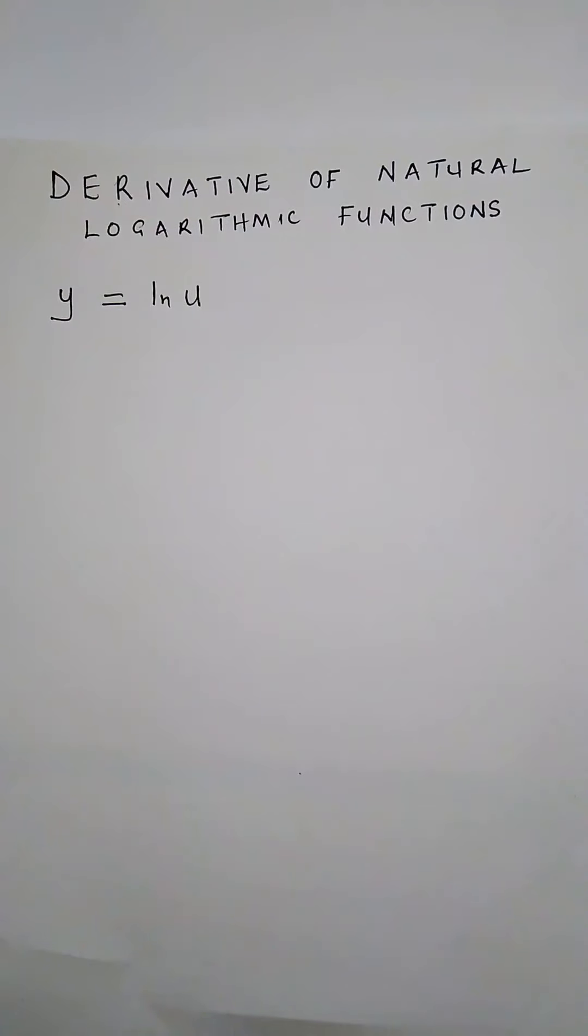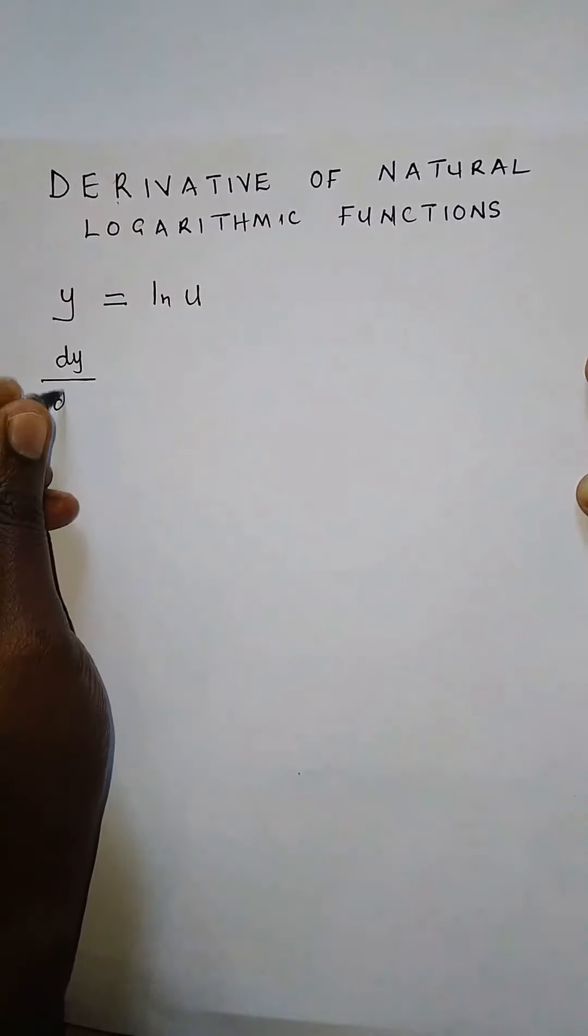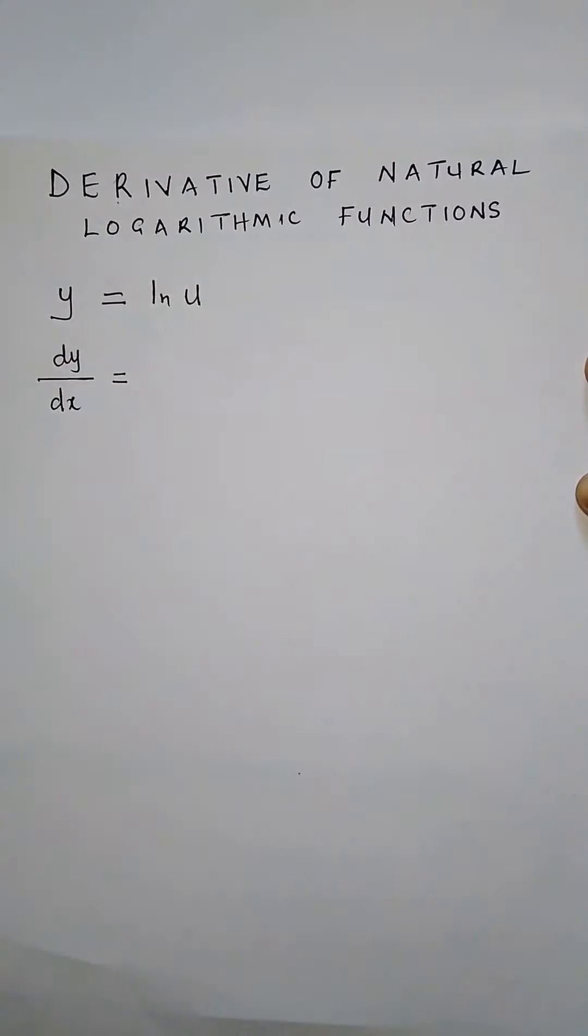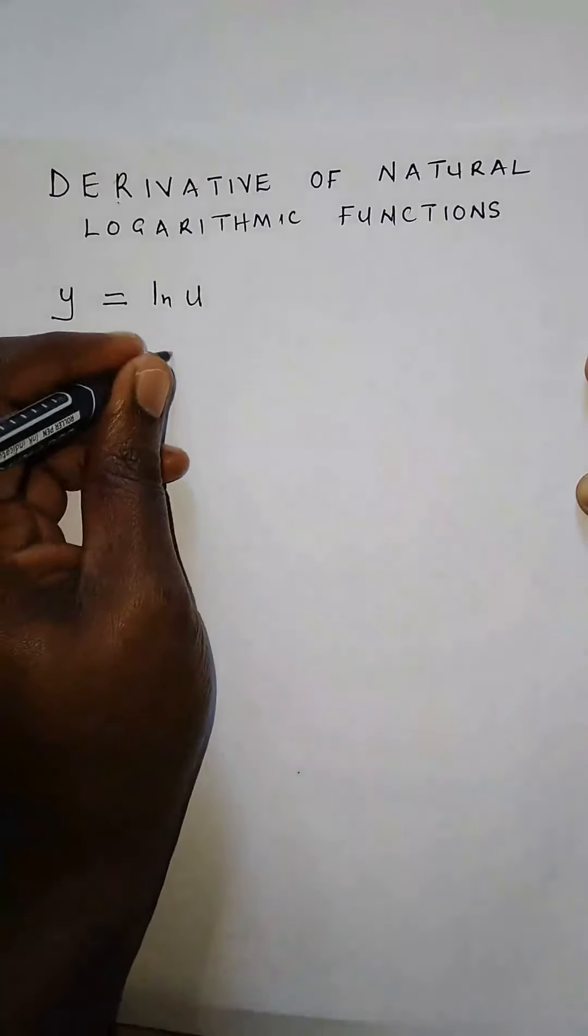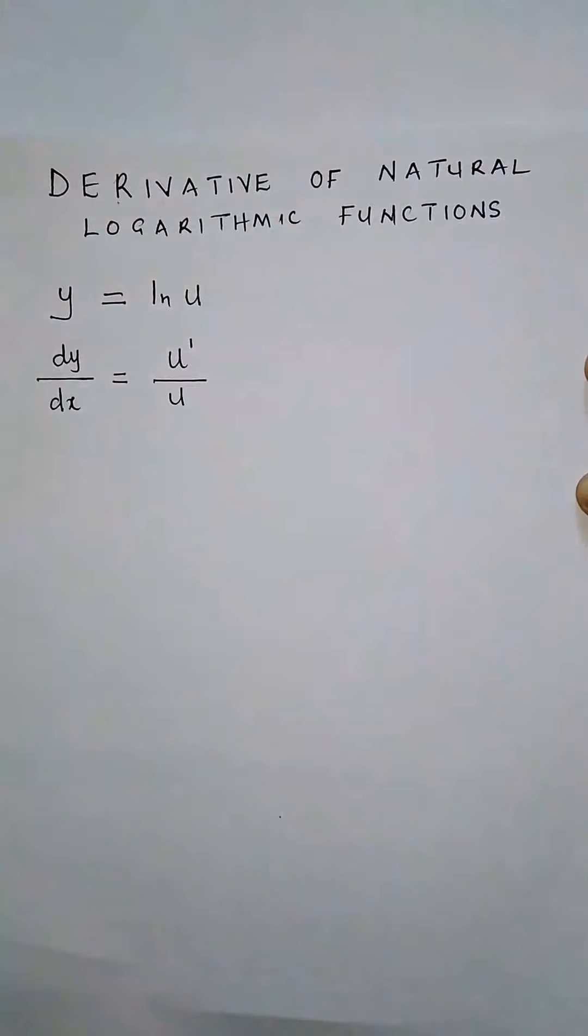To find this, we're saying dy/dx. The derivative is dy/dx, which is given by u prime over u, where u is a function of x.